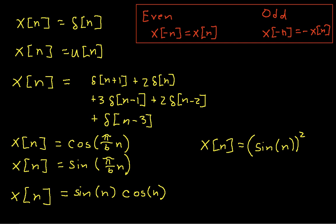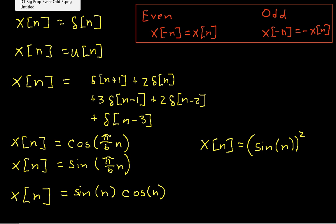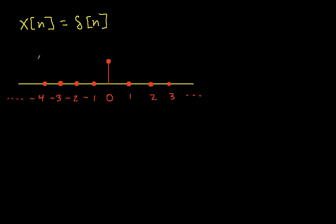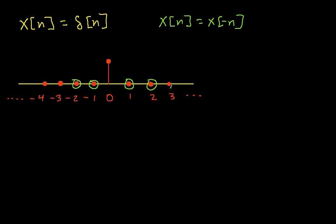Let's start with the delta function. For it to be even, I need x(n) equal to x(-n). Well, x(0) is always equal to x(0), so that works. x(1) is 0 — is this equal to x(-1)? Yes. And x(2) is 0, x(-2) is 0. I could keep going, but it's clear that the delta function does satisfy this property, so the delta function is even.